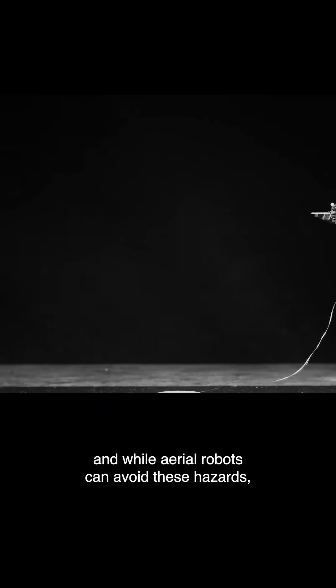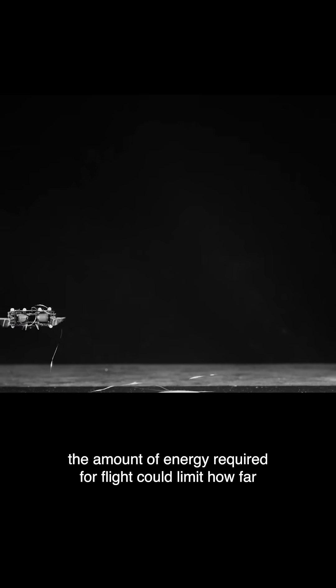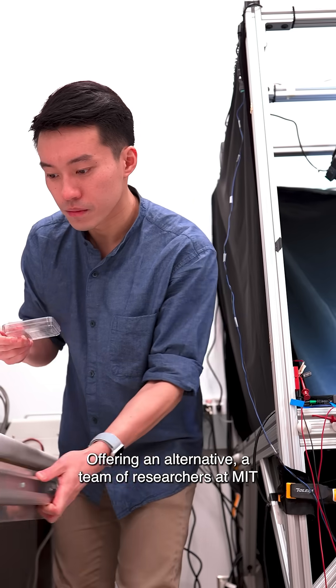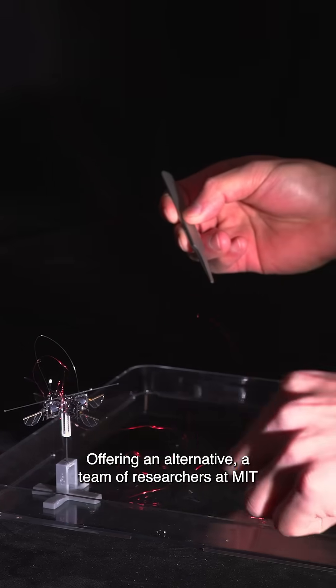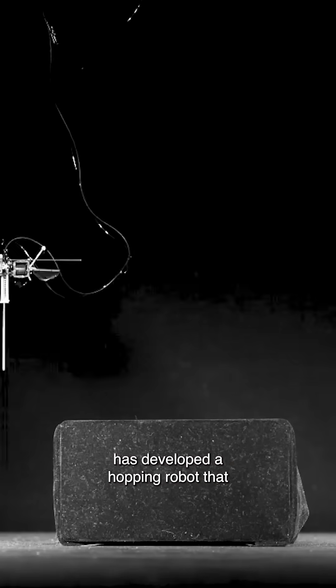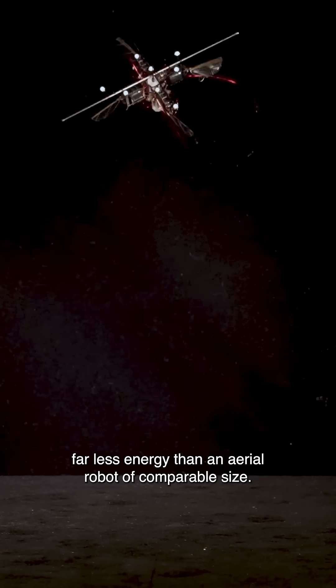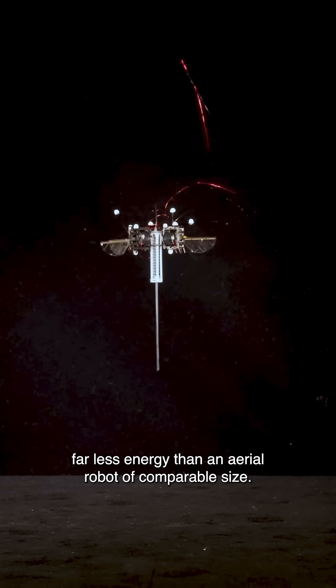And while aerial robots can avoid these hazards, the amount of energy required for flight could limit how far they can travel before needing to recharge. Offering an alternative, a team of researchers at MIT has developed a hopping robot that can leap over obstacles and jump across slanted or uneven surfaces while using far less energy than an aerial robot of comparable size.